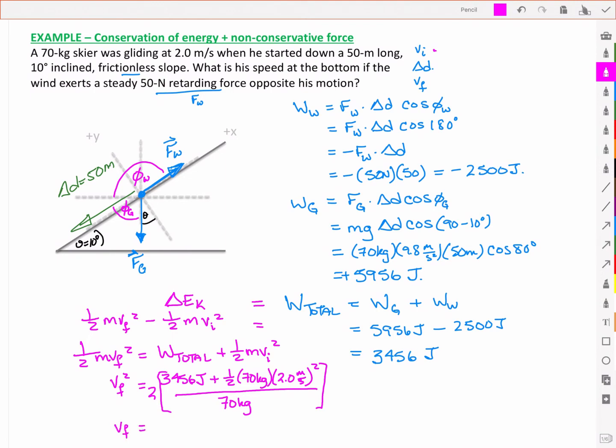And when I work that out I have a velocity, a final velocity. Take the square root, therefore I have a plus or minus 10.1 meters per second.